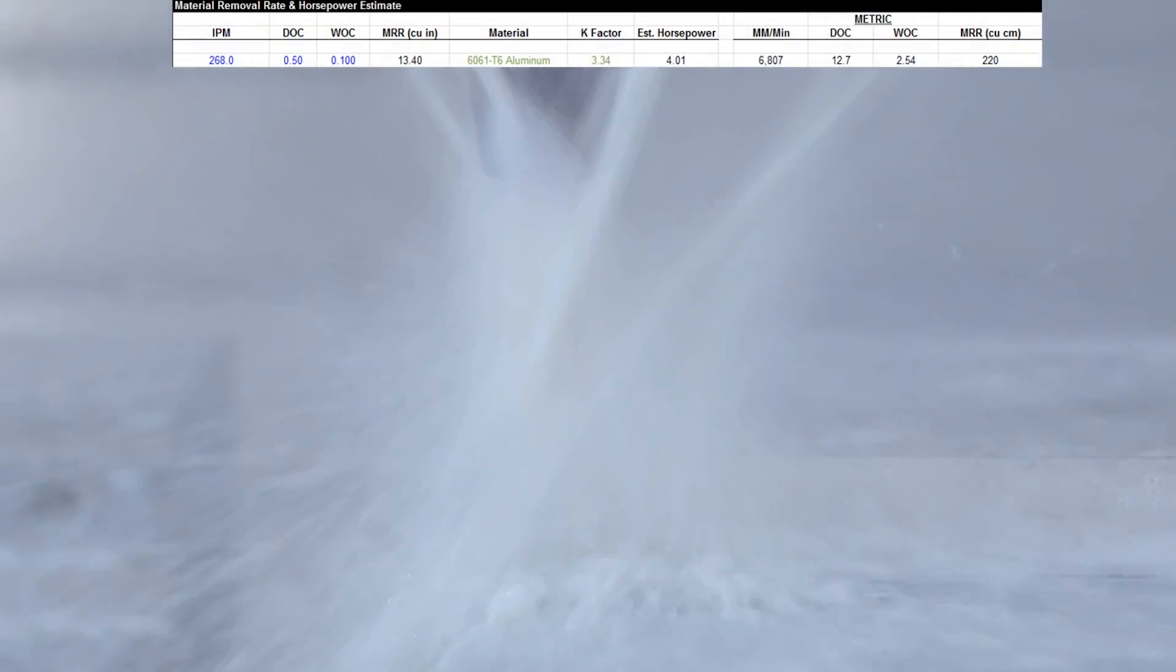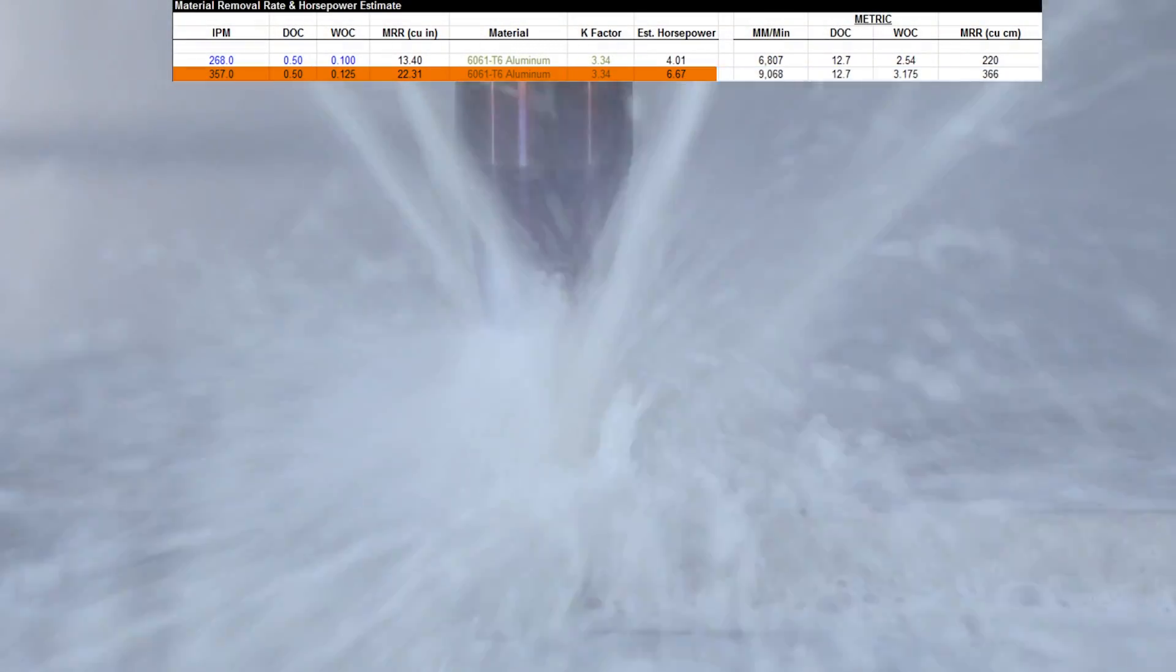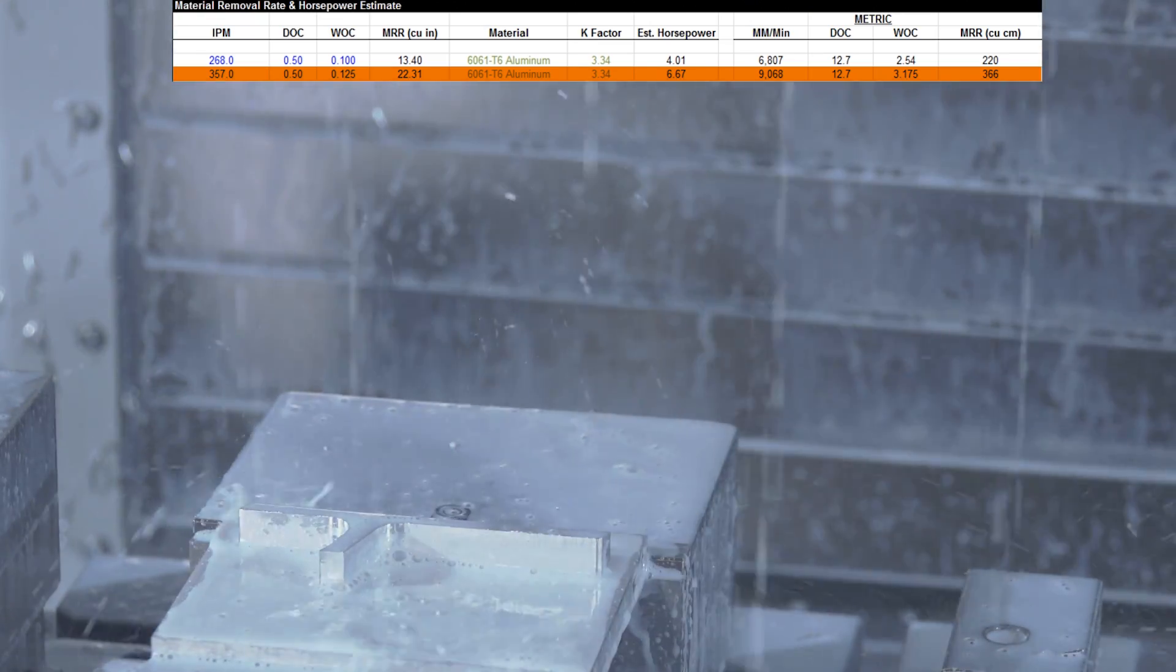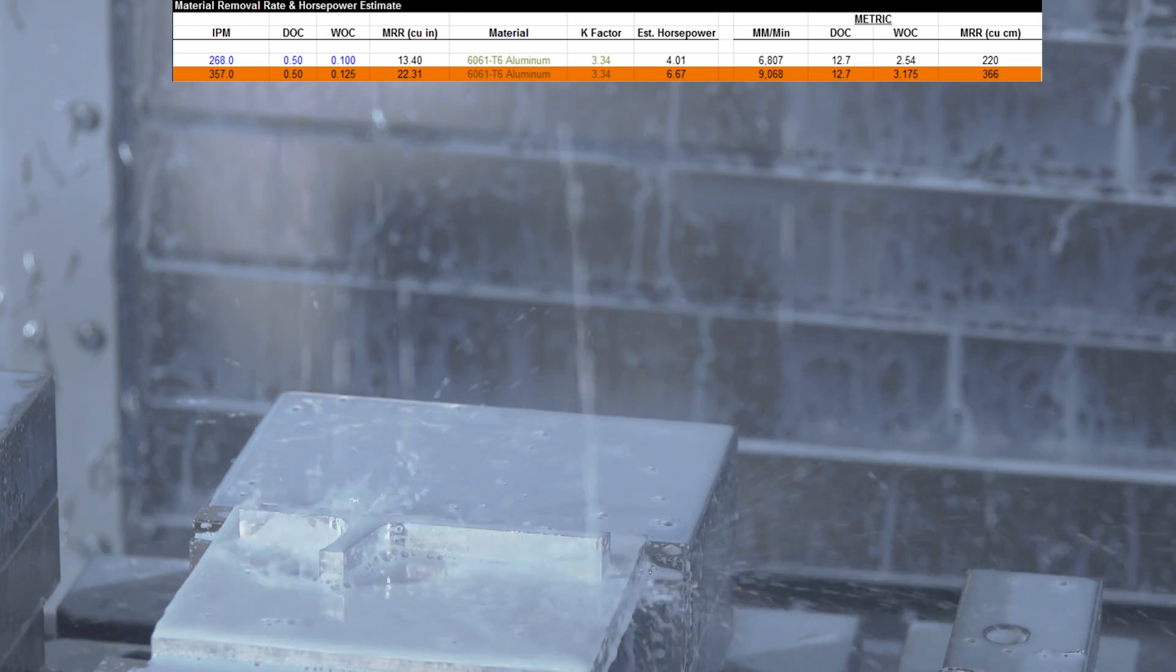Next recipe, starting to get a little beefier. 357 inches a minute, stepping up to 25% width of cut, just about doubling the cubic inches of material removal to 22. Still under 7 horsepower.